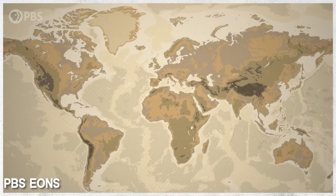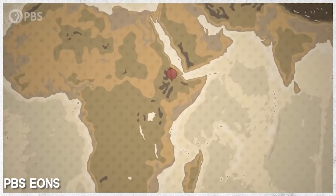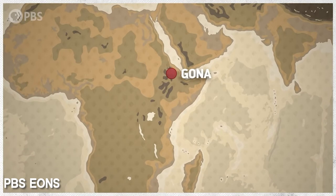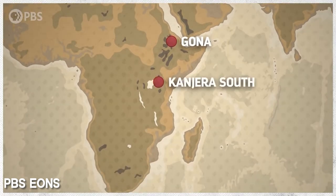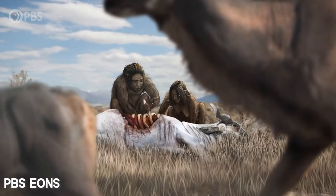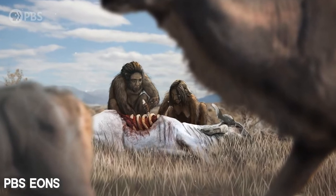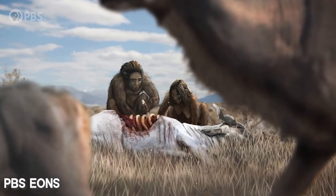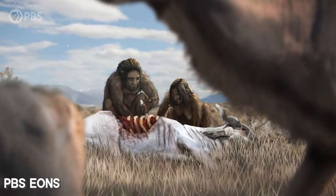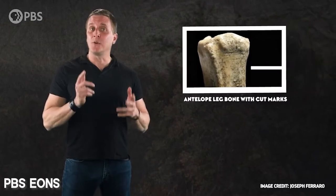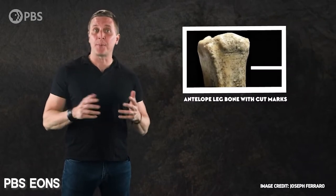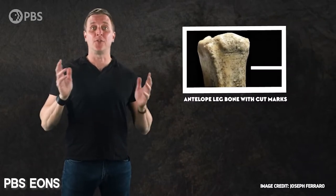Sites like Gona show us that hominids could get meat, but it's hard to tell how often they ate it. Another site, called Kanjera South in Kenya, is the first to show early members of our genus — most likely Homo habilis or Homo erectus — eating meat on a regular basis. The site dates back 2 million years, and it includes bones that have been cut into or broken open with stone tools spanning hundreds of thousands of years.